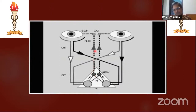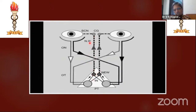The Edinger-Westphal nucleus is part of the parasympathetic nuclei of the third nerve. From there, passing by the third nerve, it goes to the lower division of the third nerve, then to the inferior oblique, then comes out and ends in the ciliary ganglion. The ciliary ganglion is a classical parasympathetic ganglion. From the Edinger-Westphal nucleus up to the ciliary ganglion is called the preganglionic fibers.